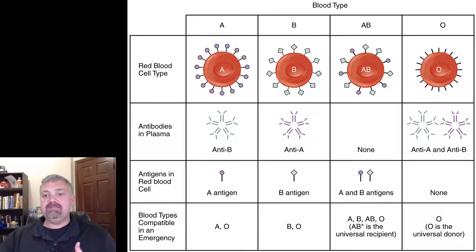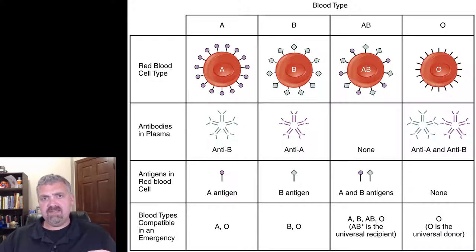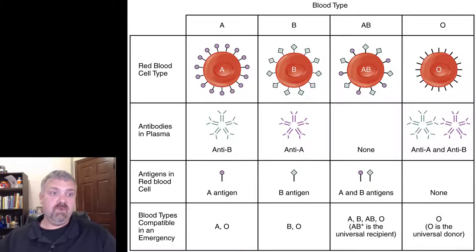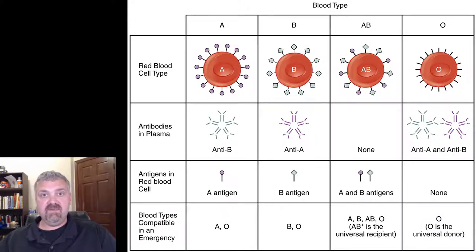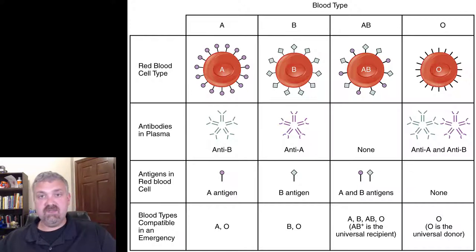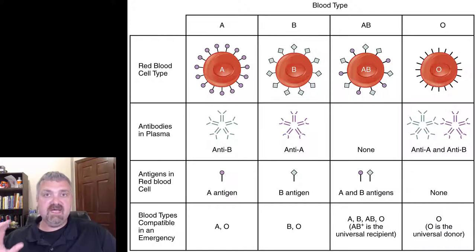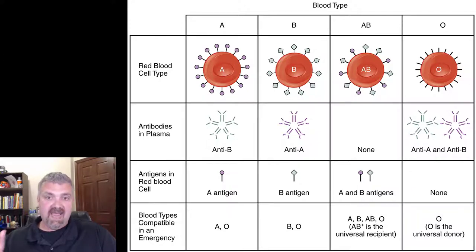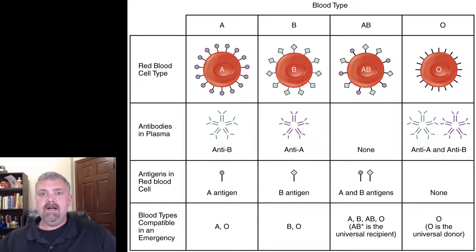What matters more — the antigens on your surface or the antibodies in your plasma? The antigens matter the most. When you get someone else's blood, the tiny bit of antibodies that would come into the system are going to be diluted with your five to six liters of blood. So when it comes to blood typing, compatibility, and giving someone else's blood, the antigens on the surface are what matter the most.